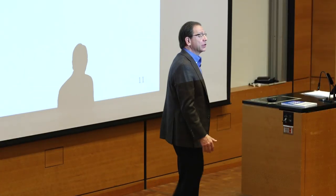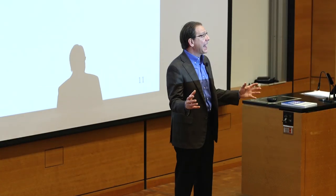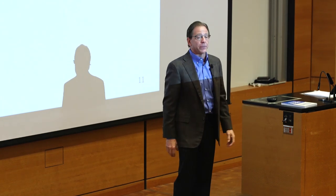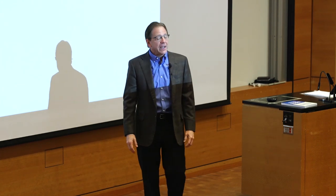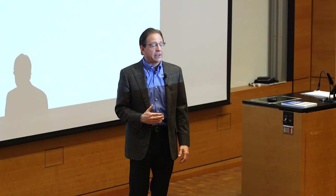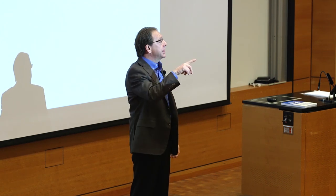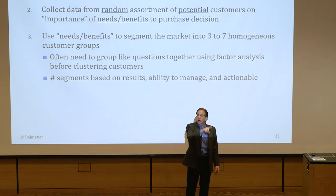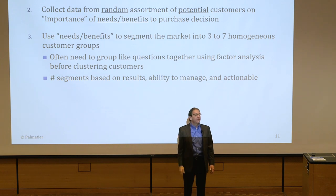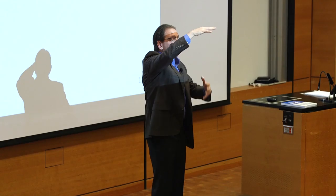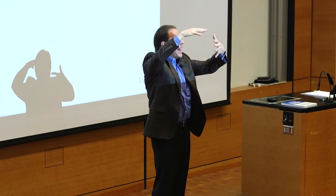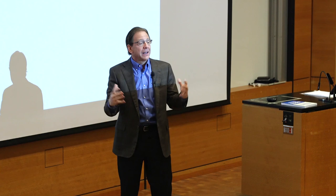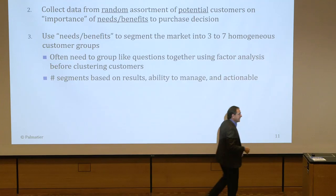Once we do factor analysis, those 50 questions might group into 10 factors — much more simplified. Then we run cluster analysis on those 10 factors, which groups customers into homogeneous groups. Think of it in terms of an Excel spreadsheet: each row is a customer, each column a question — 500 customers, 50 questions. After factor analysis, the 50 questions reduce to 10. After cluster analysis, we might have 5 customer groups with 10 factors — 50 total cells. Way more manageable. Both factor and cluster are data reduction techniques.